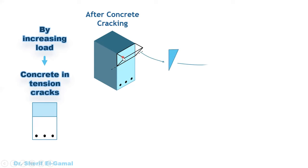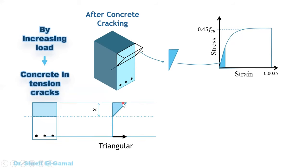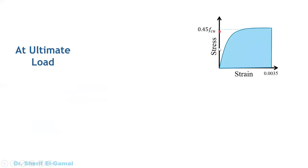The triangle stress block shape comes from the stress-strain relationship. At initial levels of loading, stress and strain are almost linear, so this triangle stress block is derived from that linear relationship at lower load levels. At ultimate, the stress-strain becomes non-linear, and the maximum is 0.45 fcu, coming from 0.67 fcu divided by gamma m which is 1.5 in the British Standard code. If you want to learn more about the stress-strain relation of steel and concrete, you can find it in a previous video.